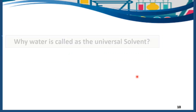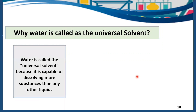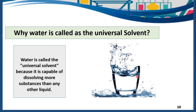Now let me tell you an interesting fact. Water acts as a universal solvent. Why? Because it is capable of dissolving more substances than any other liquid. So water has the capability to dissolve many other substances into it. But these substances should be polar in nature, according to the rule: like dissolves like.